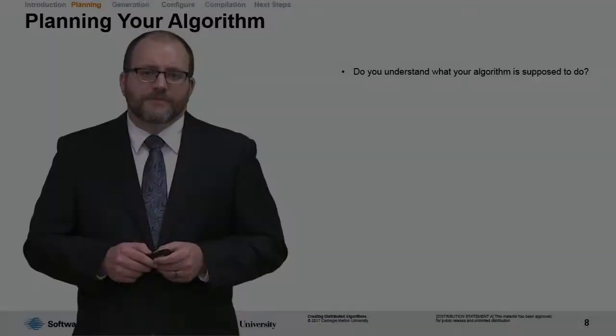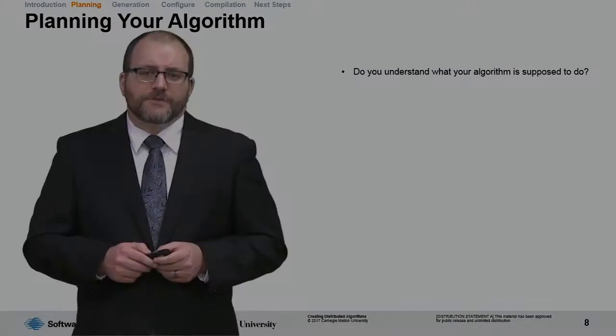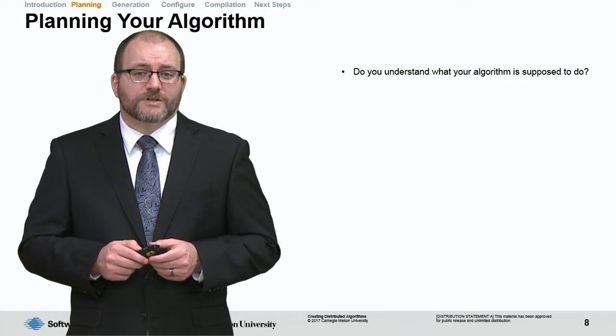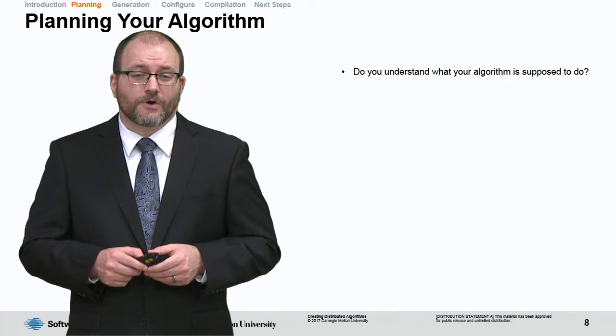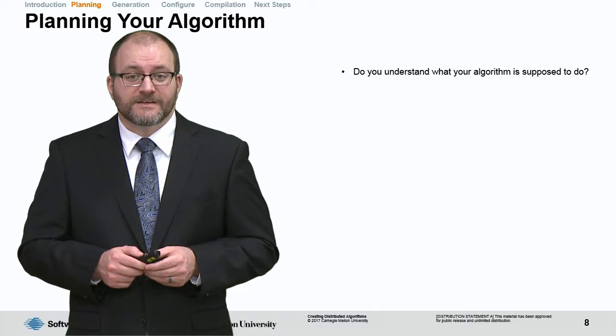Another question to ask yourself is: do you understand what your algorithm is supposed to do? This is actually the hardest part of coding an algorithm—visualizing or understanding exactly what your algorithm wants to do. Many people start just wanting to start something, but really, you should plan out what your algorithm needs to do. Can you visualize it? Can you draw it on a piece of paper?